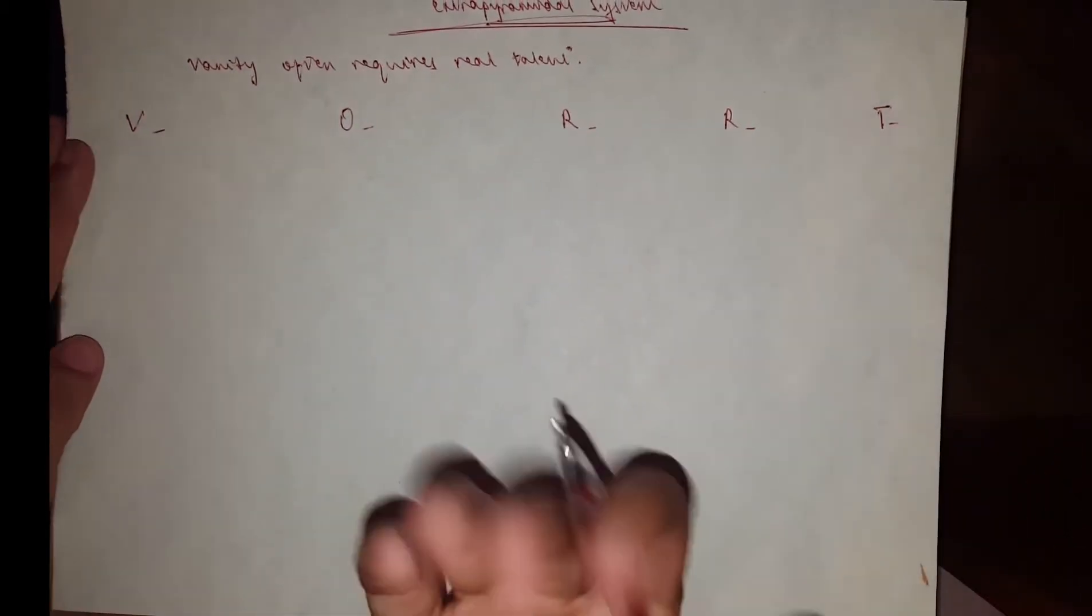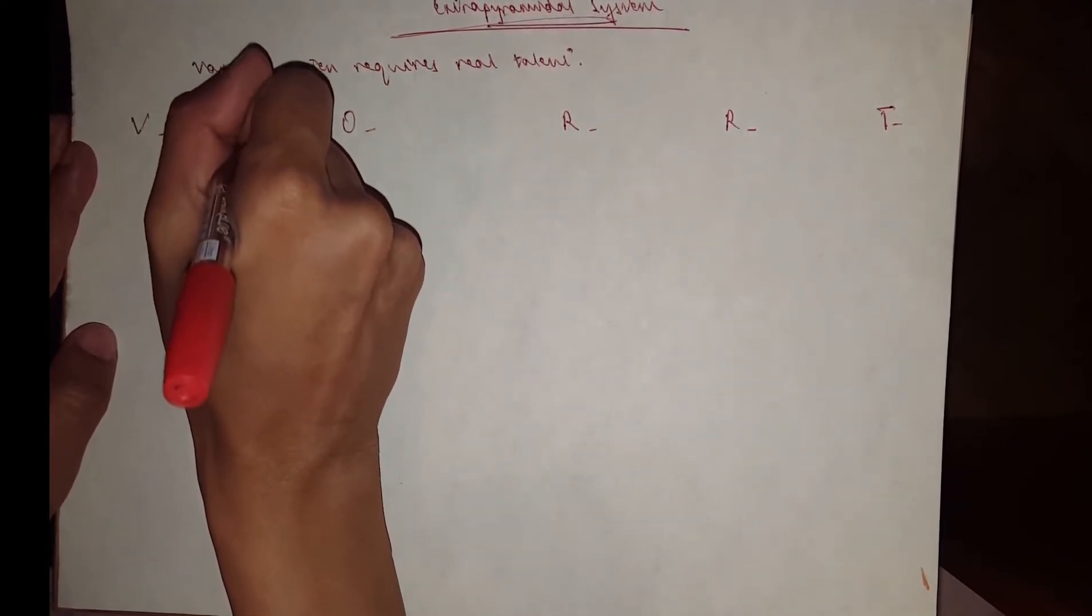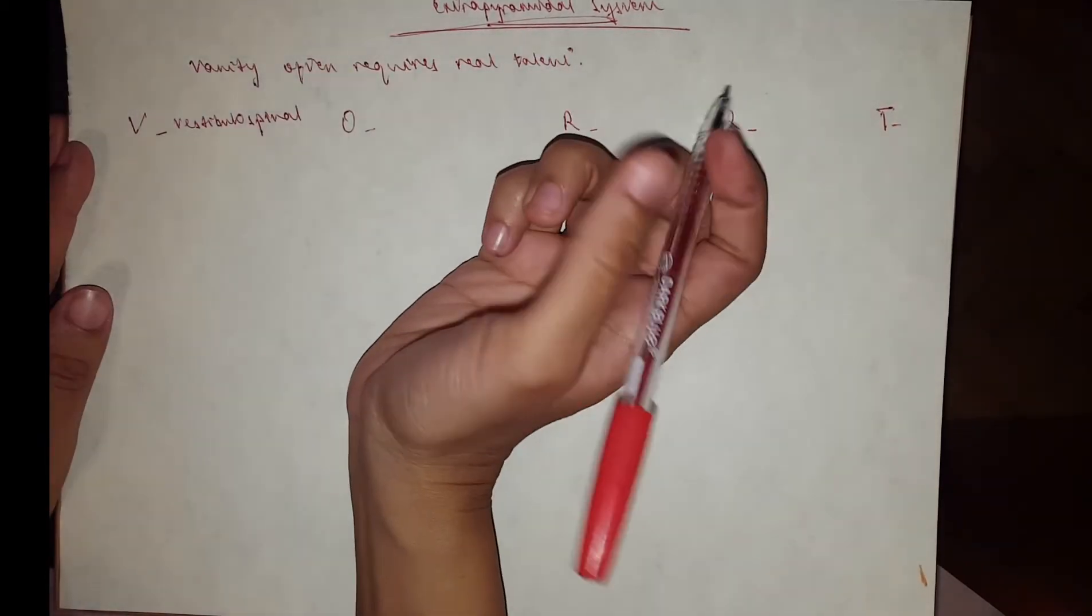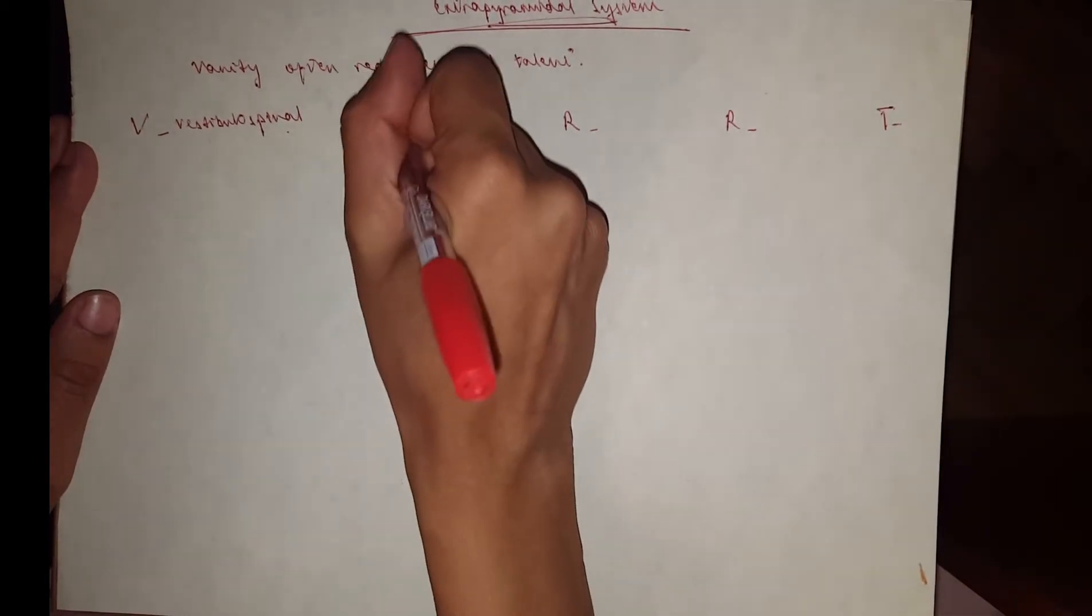Our V stands for vestibulospinal, because the extrapyramidal system is motor. We have to go from the brain to the spinal cord, then we have the olivospinal tract.